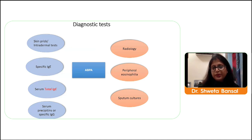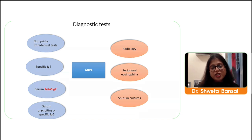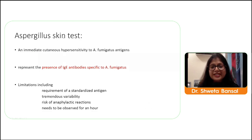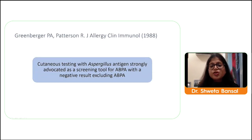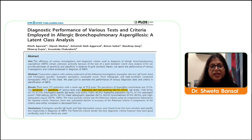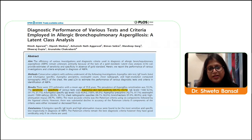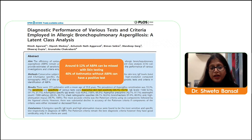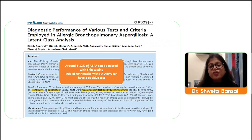Many tests are available for screening ABPA. The aspergillus skin test — an immediate cutaneous hypersensitivity or type 1 test — has long been advocated as a screening tool. A study by Ritesh Agarwal and team from PGI on diagnostic performance of various tests showed sensitivity of the skin test is 94 percent, meaning 6 to 12 percent of ABPA patients can still be missed. Specificity is 79 percent, so some non-ABPA asthma patients may still test positive.